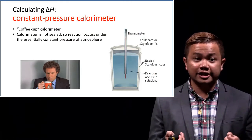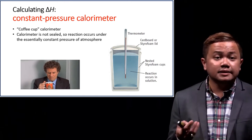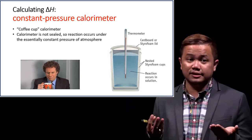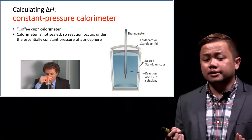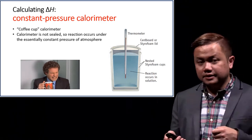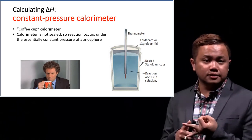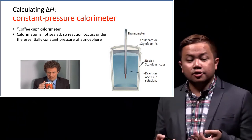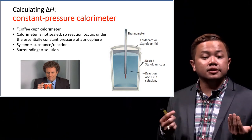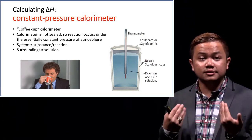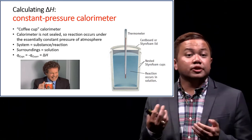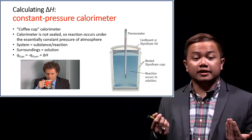Let's look at calculating delta H, or change in enthalpy. Changes in enthalpy can be measured using a constant pressure calorimeter, popularly known as a coffee cup calorimeter, meaning you can actually do this at home. Coffee cup calorimeters are not sealed; the constant pressure refers to atmospheric pressure. All you need is a stirrer, a thermometer, and a Styrofoam coffee cup. Our system is the substance or reaction being studied, and the surroundings is the solution it is in.